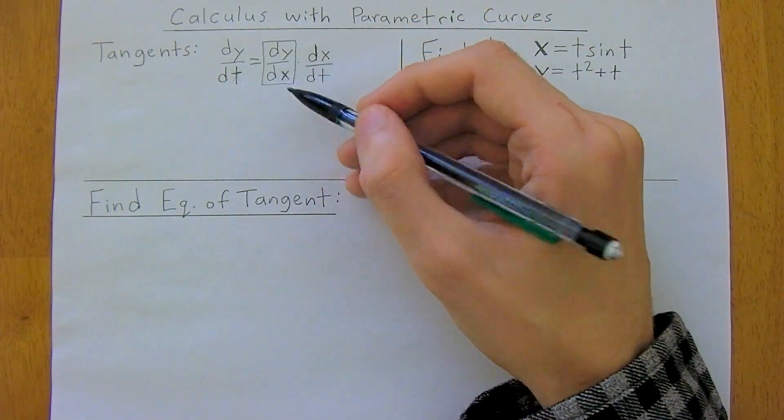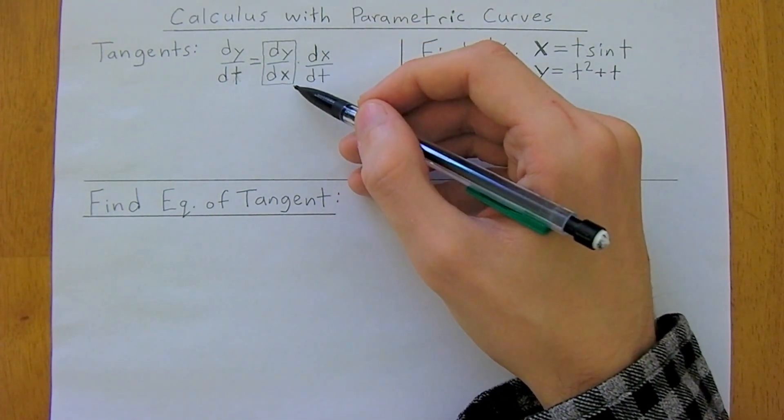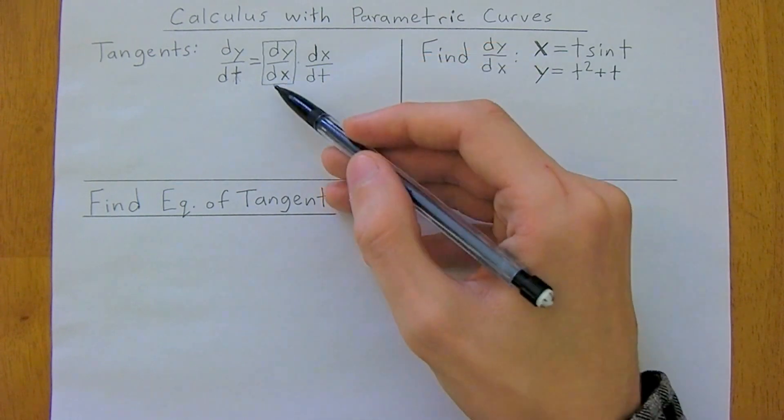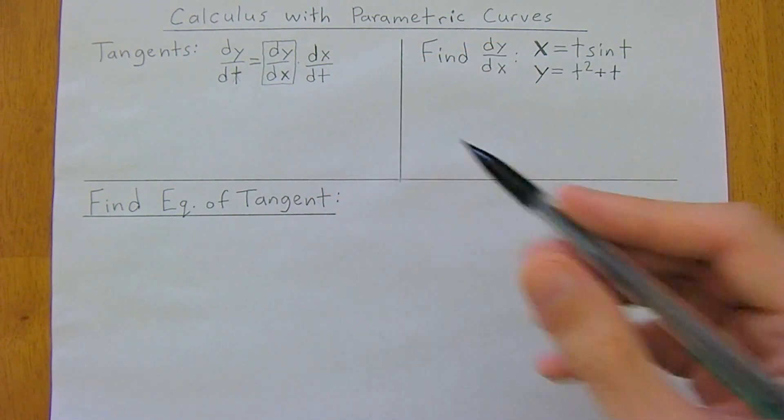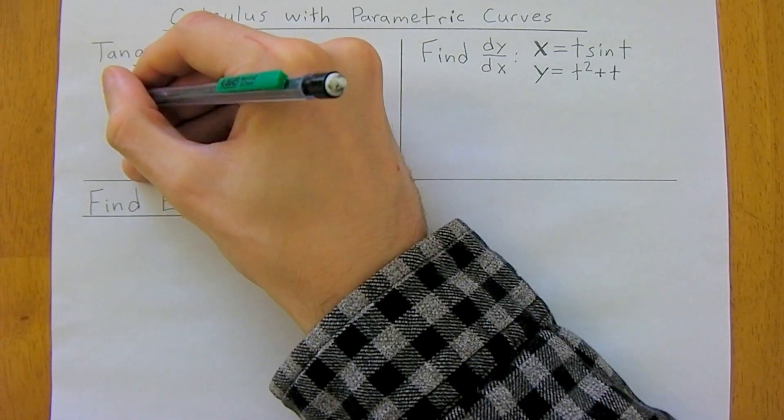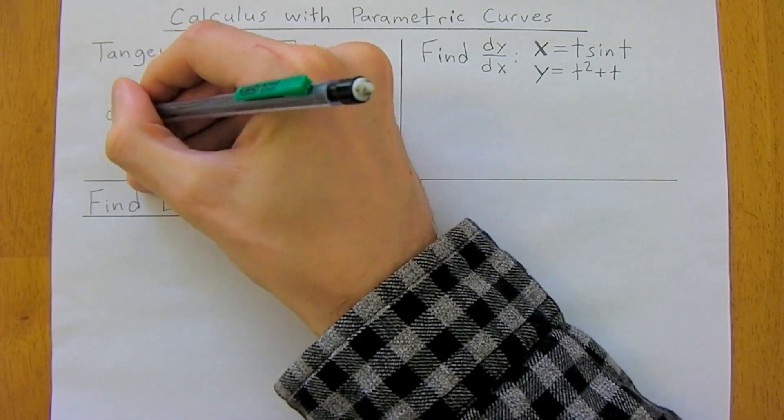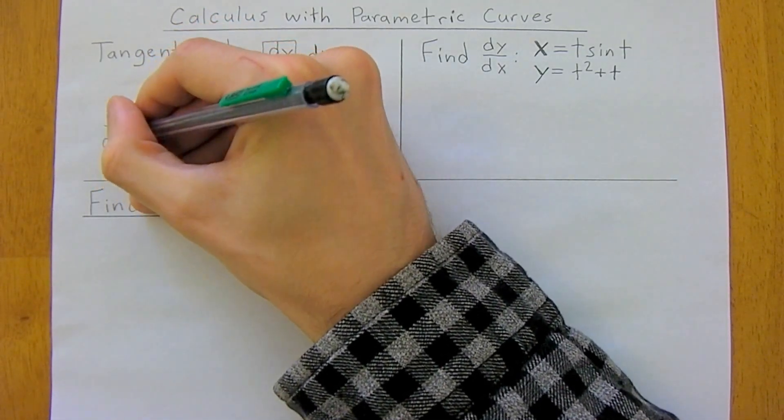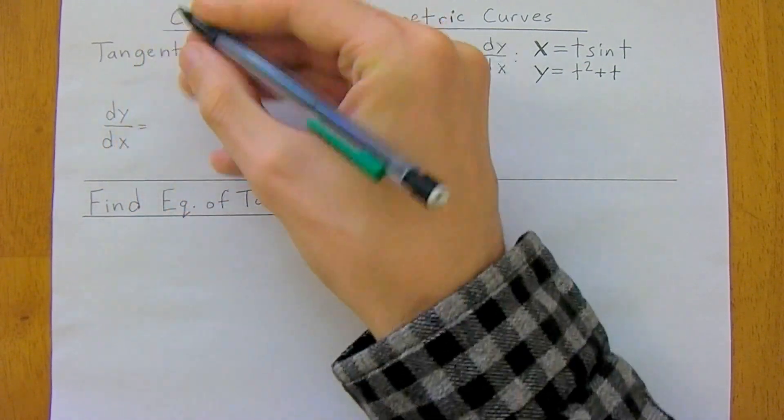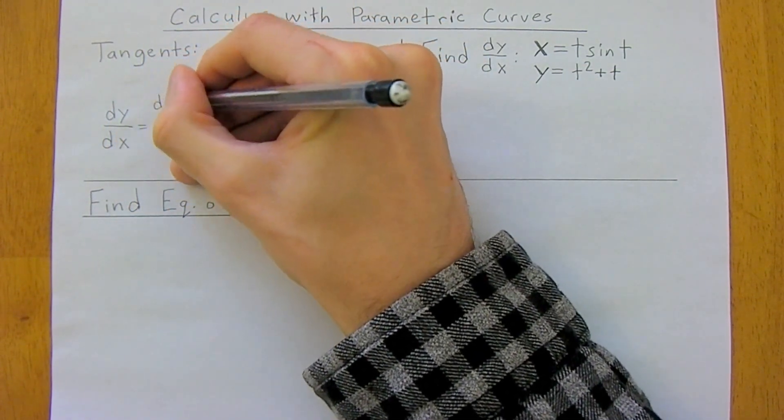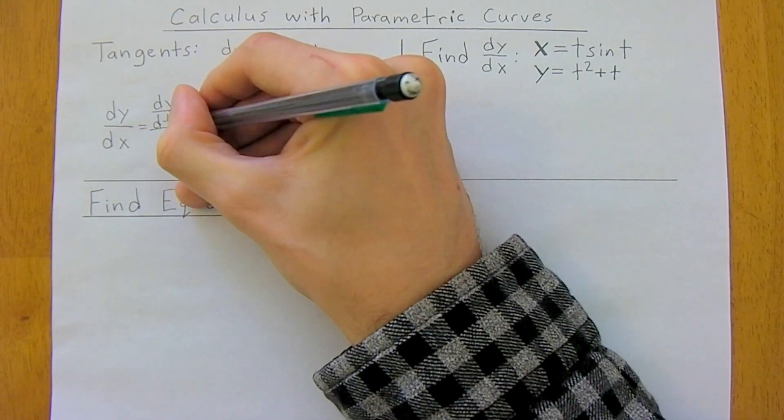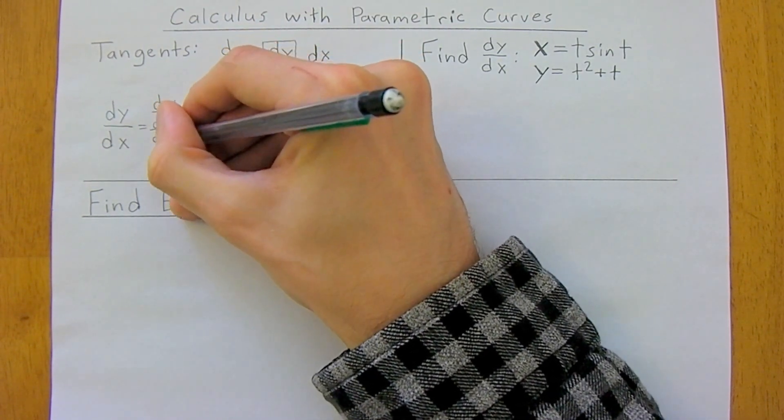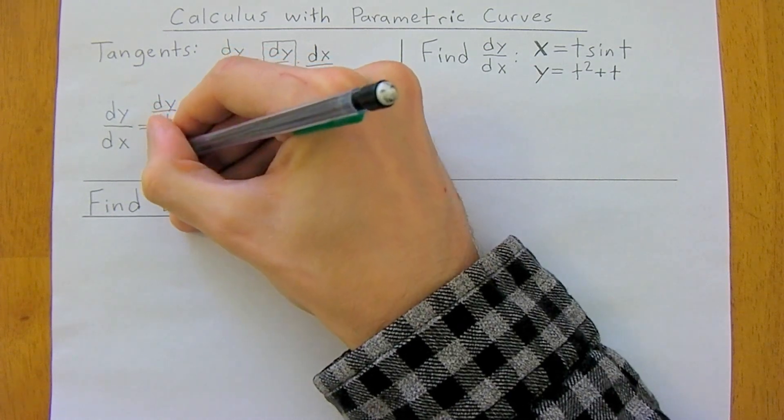So we want to get this term by itself, and to do that you're just going to divide both sides of this equation by dx over dt. Therefore, dy over dx is equal to dy over dt divided by dx over dt.